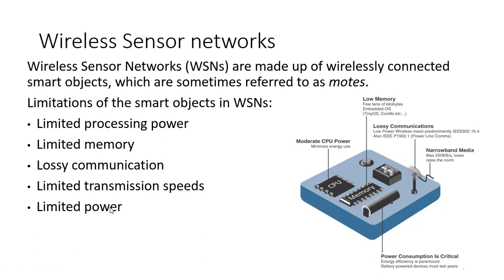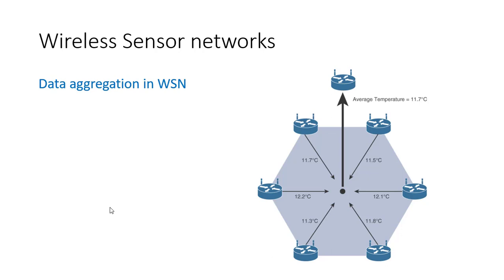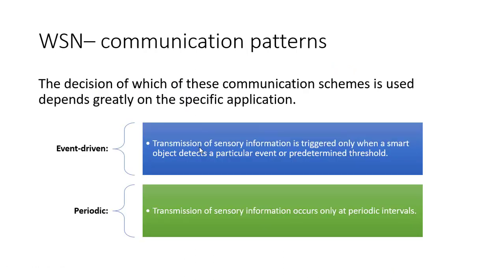A general term used in sensor networks is data aggregation — for example, computing an average of all sensed values. Communication patterns in wireless sensor networks can be either event-driven or periodic. Event-driven means communication starts when some event happens; periodic means communication happens every few seconds. Which one to use depends on the kind of application and deployment.